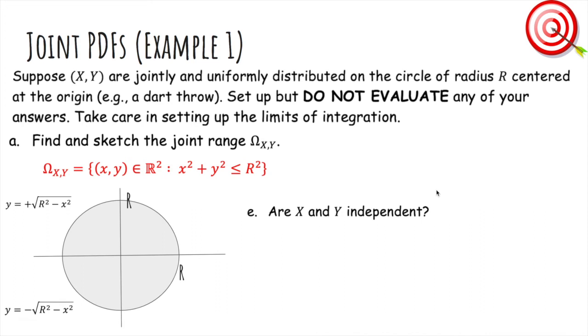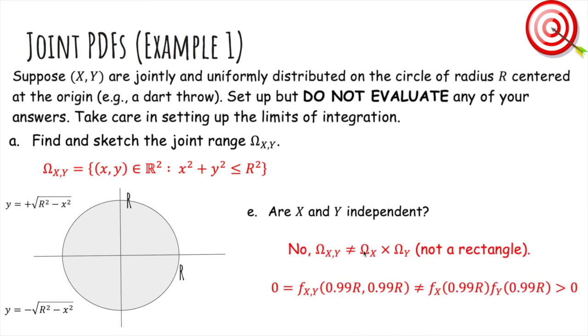Are x and y independent? No, the joint range is not a rectangle, and the reason why is if you take a point that was supposed to be in the rectangle but isn't, the joint PDF is zero because it's not shaded.